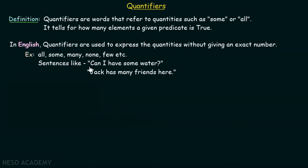We could have sentences like: 'Can I have some water?' or 'Jack has many friends here.' In these sentences, we are not using exact numbers — we are not saying how many friends Jack has. Instead of saying two, three, or four friends, we say Jack has many friends. These words are called quantifiers; we are quantifying the statement using these words instead of exact numbers.